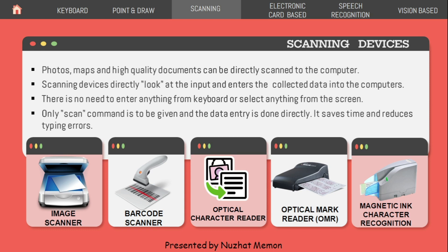Next category is scanning. There are five types of scanning devices: image scanner, barcode scanner, optical character reader, optical mark reader (OMR), and magnetic ink character recognition (MICR). Scanning devices directly look at the input and enter the collected data into the computer. Photos, maps, and high-quality documents can be directly scanned. There is no need to enter anything from the keyboard — only a scan command is given, saving time and reducing typing errors.